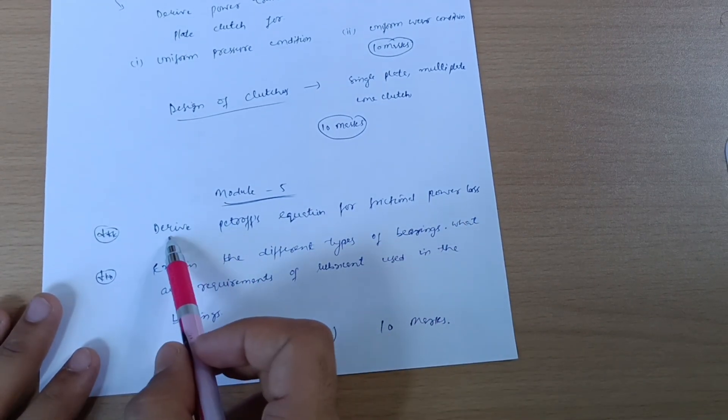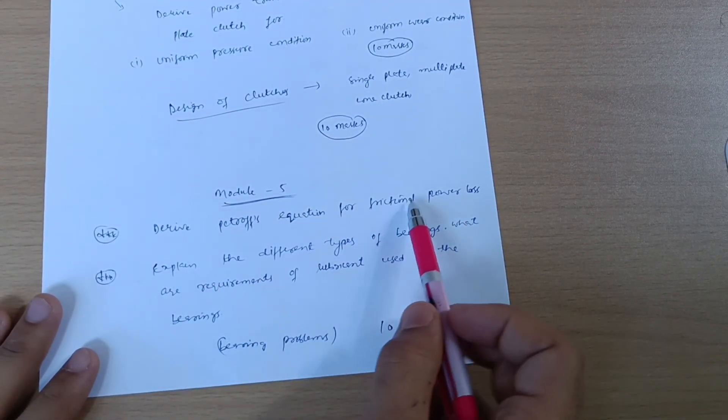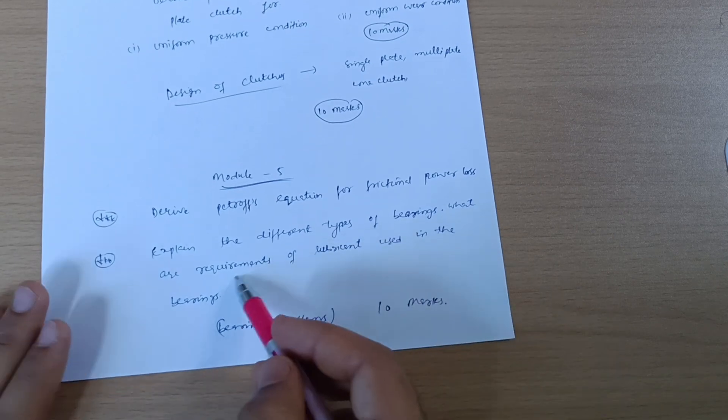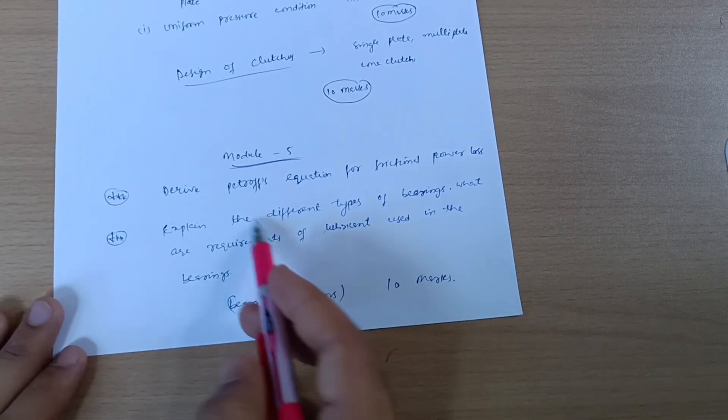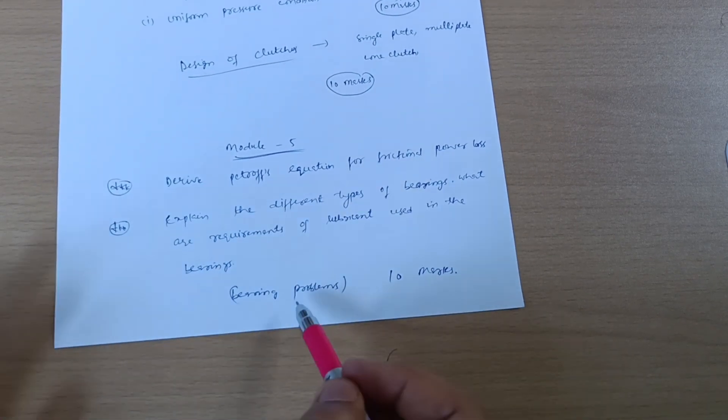Next is Model 5. Super important question: derive Petroff's equation for frictional power loss. Explain the different types of bearings. What are requirements of lubricant used in the bearings? These are the two theoretical questions.